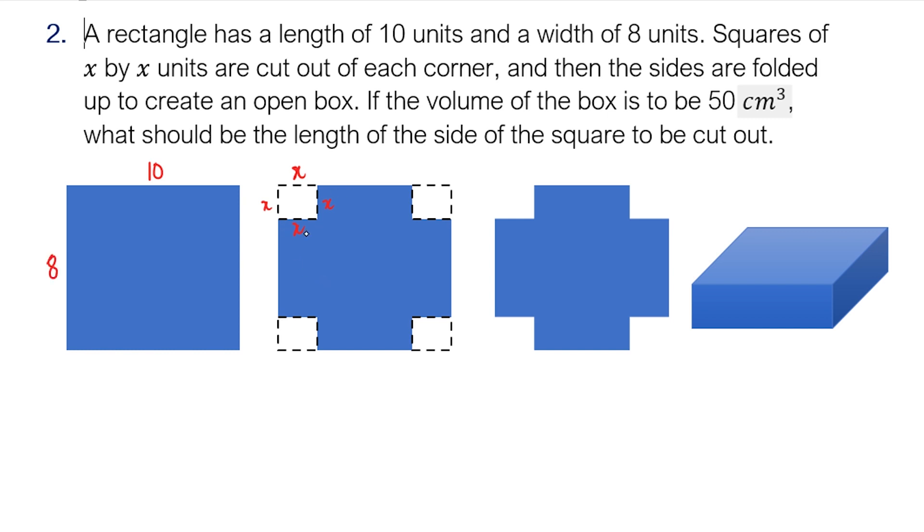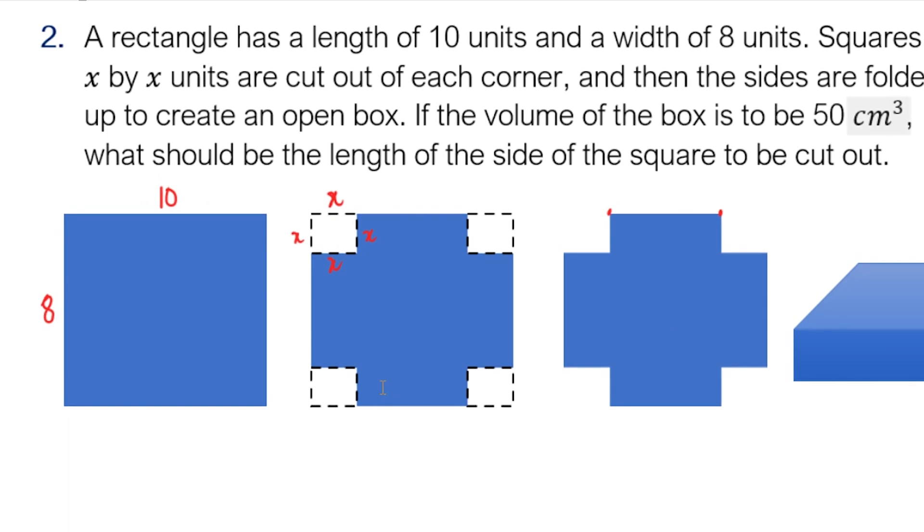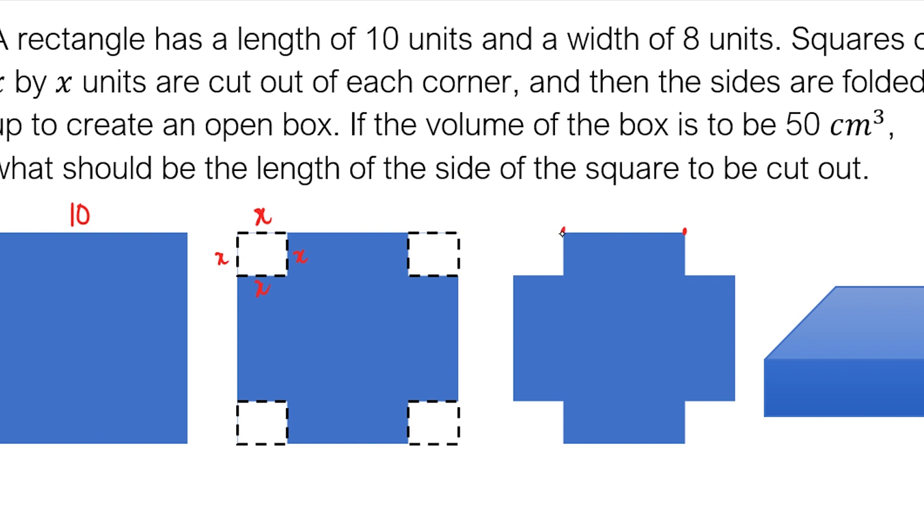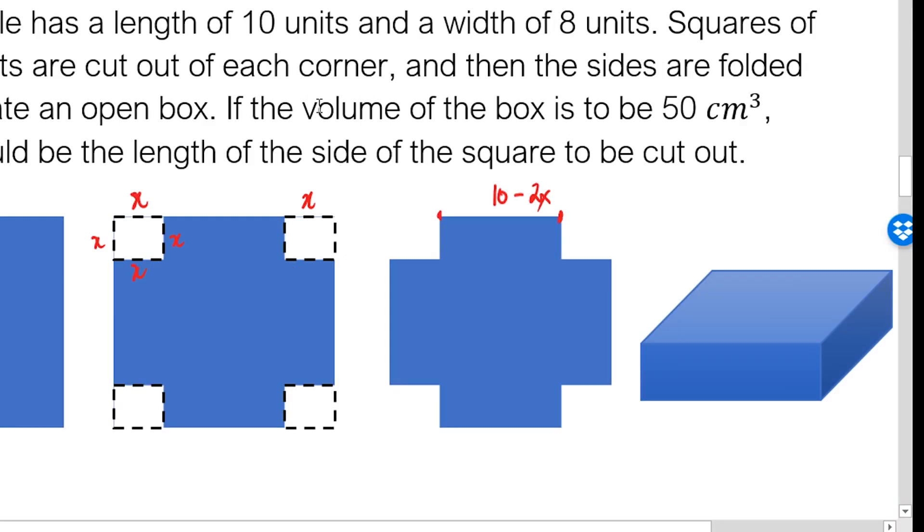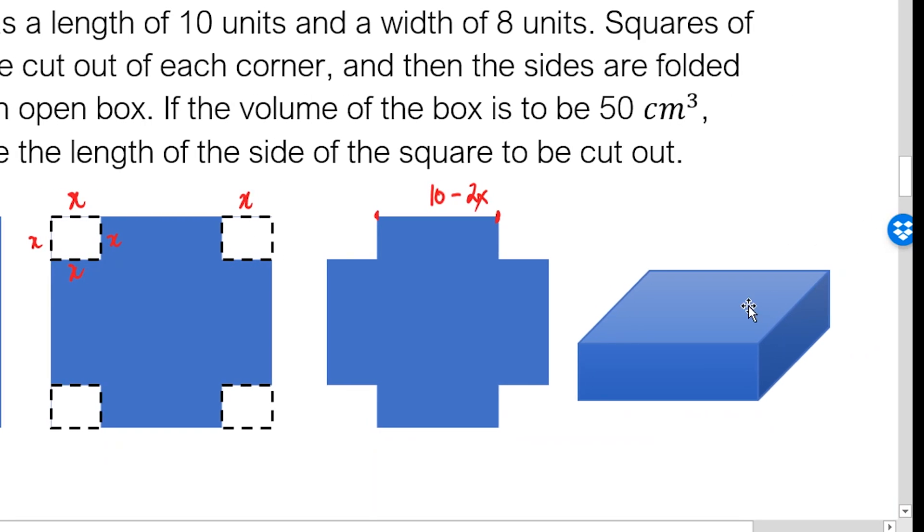Now, when you cut squares of size x by x at the corners, how long is this? From here up to here. Let me zoom that in. That means from this point up to this point, that is x, that is 10, then it will be reduced by two x. That corresponds to this length, right?